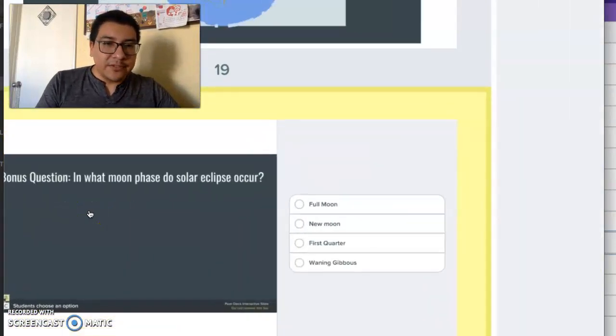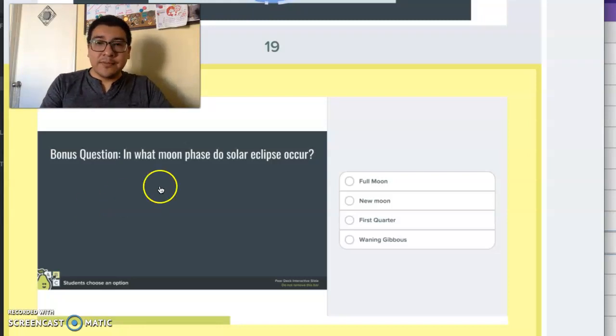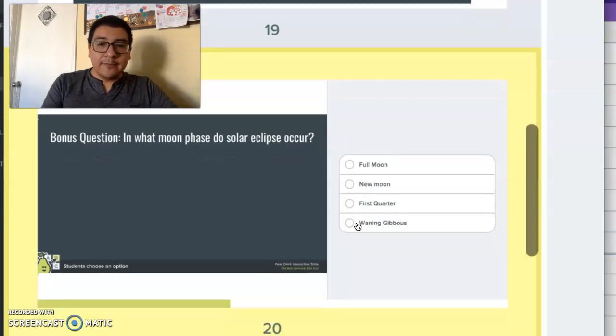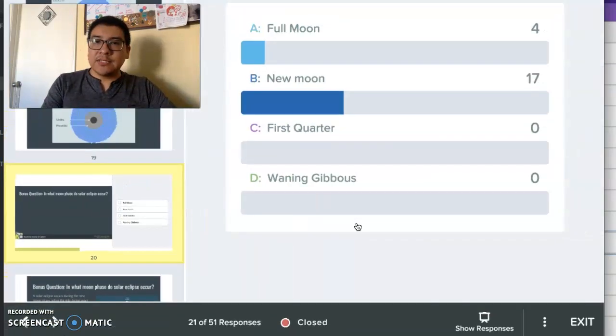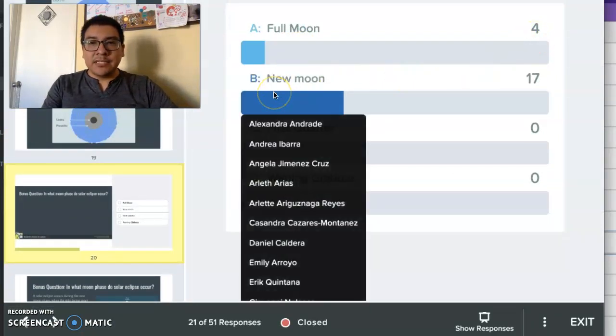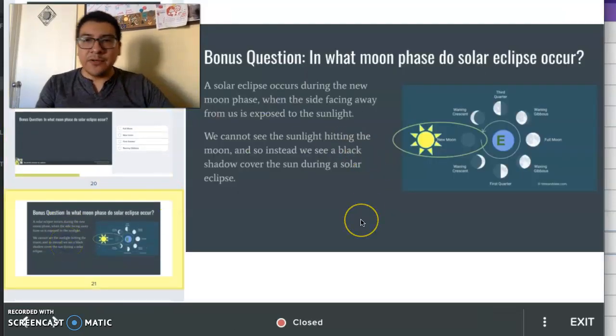Last thing I want you guys to do is go ahead and answer this question. In what moon phase do solar eclipses occur? The options here are full moon, new moon, first quarter, and waning gibbous. We'll take a minute to answer that. And the answers that the students provided: four answered full moon and 17 answered new moon. And the answer that we were looking for is the new moon.